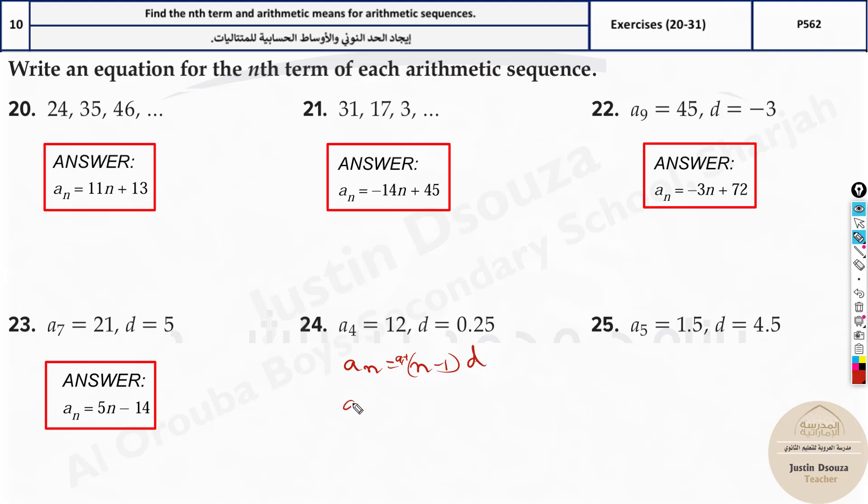But what do you have? You have a_4 equals a_1 is unknown, plus what is n? N is 4. 4 minus 1 times d is 0.25. So here a_4 is 12 equals a_1 plus 4 minus 1 is 3, 3 into 0.25 is 0.75. And take this to the other side. It becomes 12 minus 0.75. 11.25 is a_1.